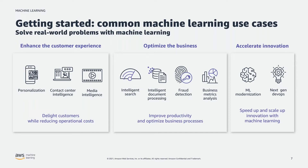Contact center intelligence is another really prevalent use case. Almost every company has some sort of contact center where customers call in for support, to place orders, or whatever they're doing. What you want to do is make sure customers are serviced in the most optimal manner and timeframe possible. A lot of companies are using virtual agents or chatbot solutions to deflect simple queries away from human agents, allowing human agents to focus on more complex tasks.